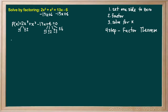Let's start by guessing and checking integer potential roots, starting with 1 and negative 1, which come from a numerator of plus or minus 1 and a denominator of plus or minus 1. Evaluating p of positive 1, by inspection we get 2 plus 1 plus 6 minus 13, which is not equal to 0. Evaluating p of negative 1 gives a similar analysis, confirming negative 1 is also not a root.